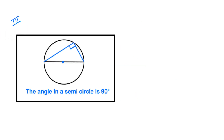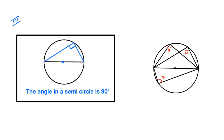The third theorem: the angle in a semicircle is 90 degrees. So if you have a diameter and you have an angle facing the diameter, that angle is going to be 90 degrees. In this question, this is the diameter — it passes from the center — so angle x is 90 degrees, angle y is 90 degrees, angle z is 90 degrees. Remember: if you have a diameter and there's an angle opposite the diameter, it is going to equal 90 degrees.